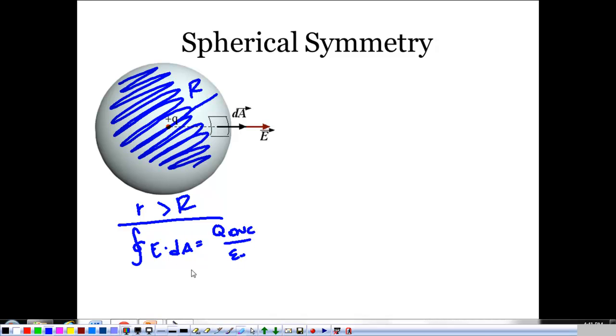But if we're outside of this thing, then our enclosed charge is just Q over epsilon naught, and it's E times the surface area of my Gaussian sphere, 4 pi R squared. So E is exactly, on the outside, what we had before, KQ over R squared.